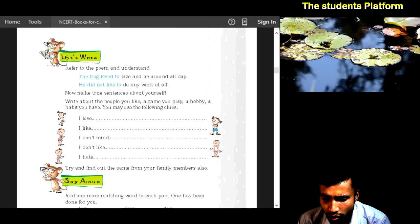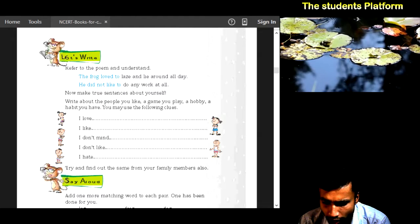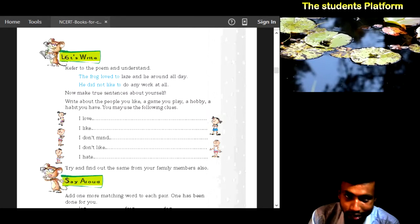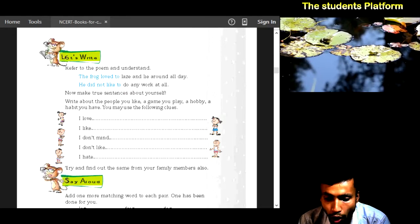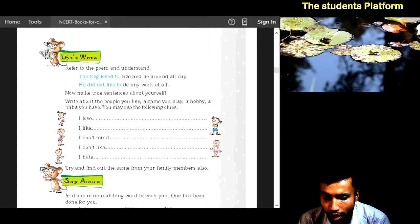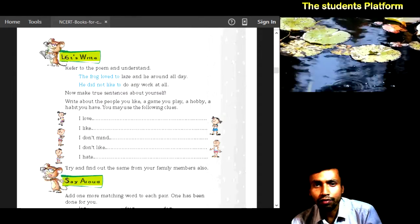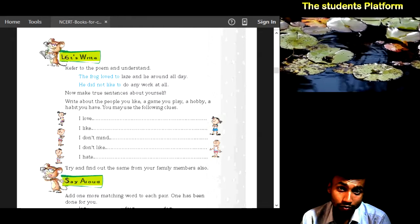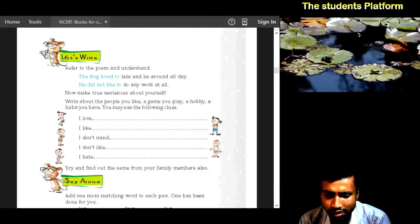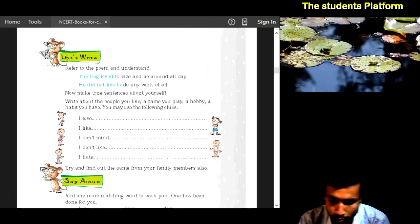The frog loves to laze and lie around all day. He did not like to do any work at all. Now make true sentences about yourself. You write about the people you like, a game you play, a hobby, a habit you have. You may use the following cues: I love to play, I like to sing, I don't mind if someone makes fun of me, I don't like to wander here and there uselessly, I hate eating chutney. What do you like? You can write a sentence.